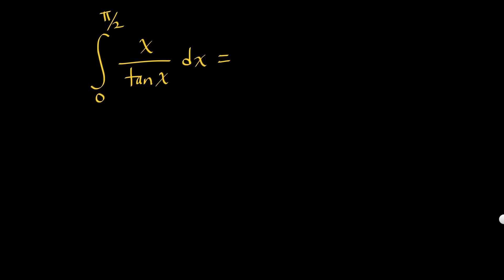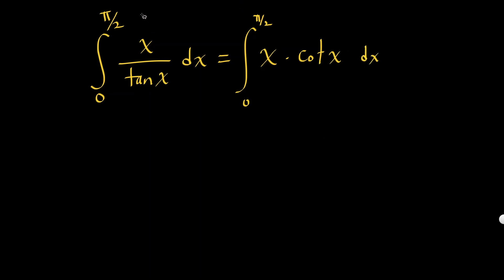Let's integrate this problem. We have x over tangent x, dx. First, I'm going to change tangent into cotangent x because it's a reciprocal function, so we get x times cotangent x dx. Then let's use integration by parts.